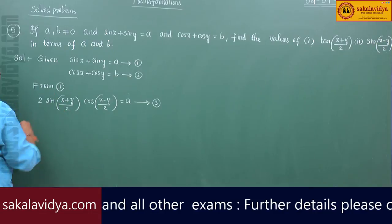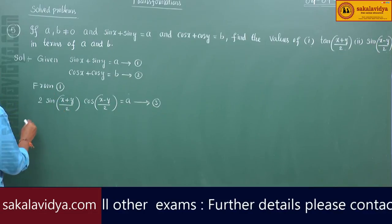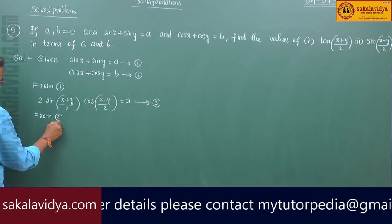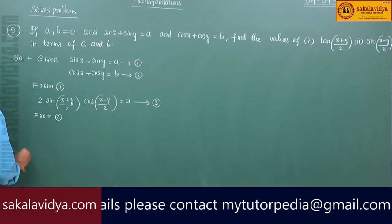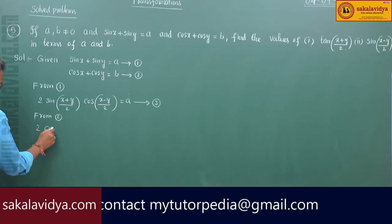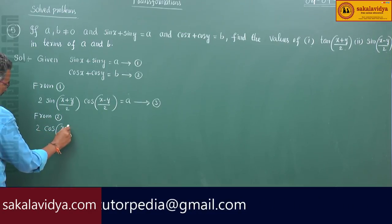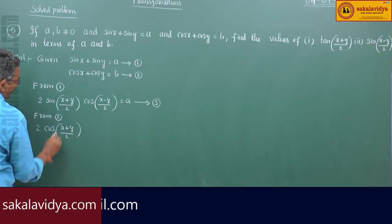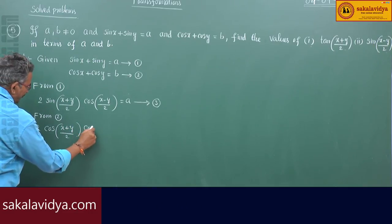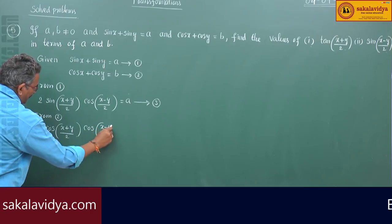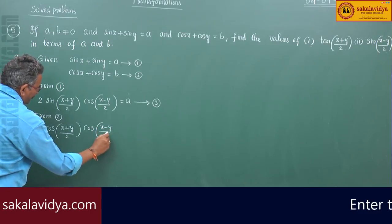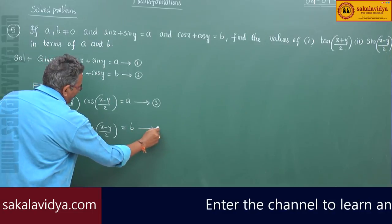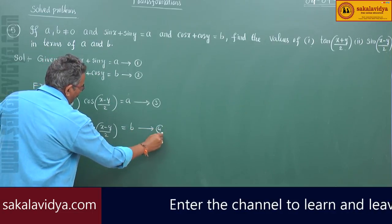Cos x plus cos y is equal to b — say this is equation 2. From equation 2, that will be 2 cos of (x+y)/2 times cos of (x-y)/2 equals to b. Say this is equation 4.